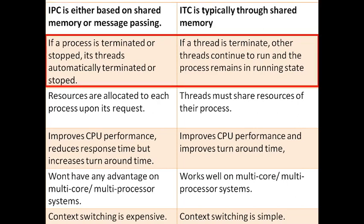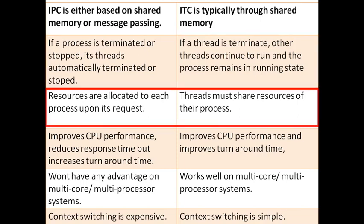If a process is terminated, its threads are automatically terminated—threads cannot execute when the process itself is terminated. But if a thread is terminated, it does not affect the remaining threads or the process; only that particular thread gets terminated. Resources are allocated at the process level—whenever a process needs certain resources, all resources are provided to the process by the operating system, and those resources are equally available for all threads. There is no thread-level resource allocation done by the operating system; all resource allocation is only done at the process level.